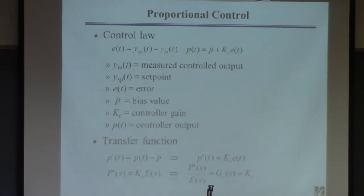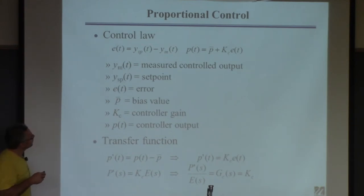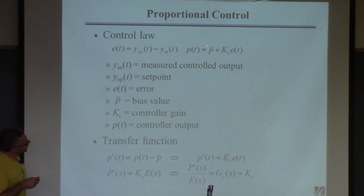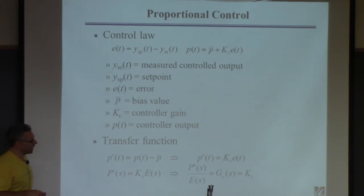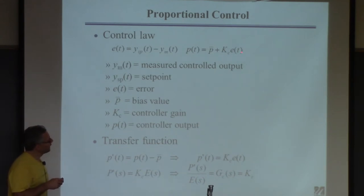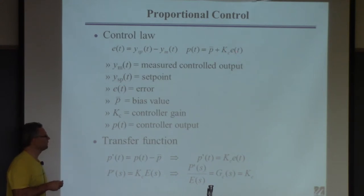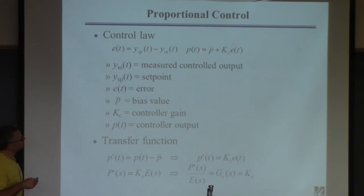Last time I introduced the proportional controller. This controller takes the difference between the desired value of the output and the measured value, which generates an error signal, and then operates on it with a gain. The output of the controller is the controller gain times the error signal, plus a bias value. If the error is big, the controller should do a lot; if the error is small, the controller shouldn't do a lot.